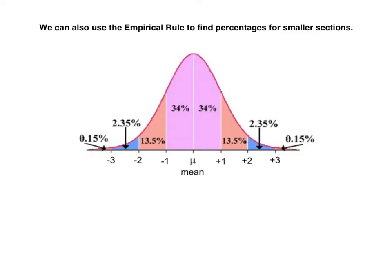From the mean to 1 standard deviation above is 34% of our data. From 1 to 2 standard deviations above is 13.5%. From 2 to 3 standard deviations is 2.35%, and above 3 standard deviations is 0.15%. Those four percentages to the right add up to 50%, and the other 50% is below the mean. Since the curve is symmetric, the left side is just a mirror image of the right side.